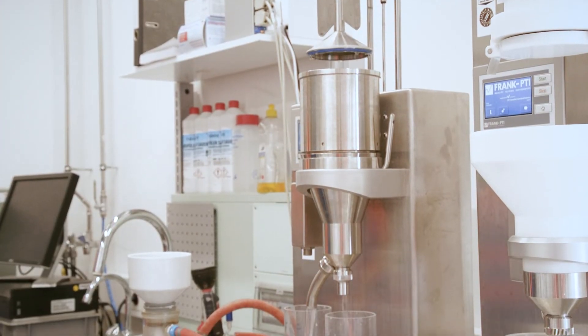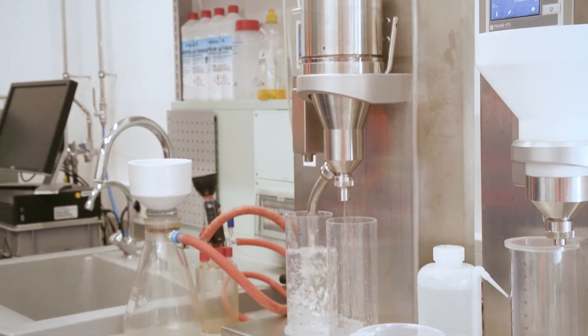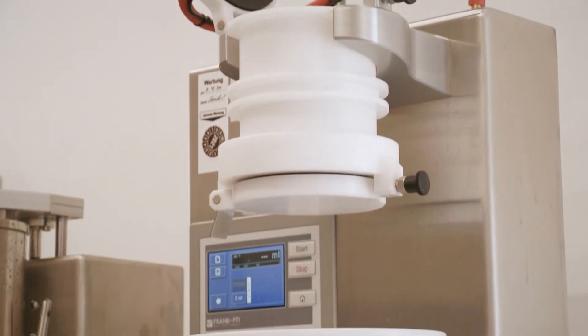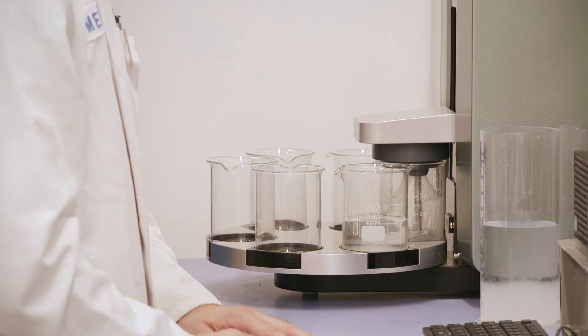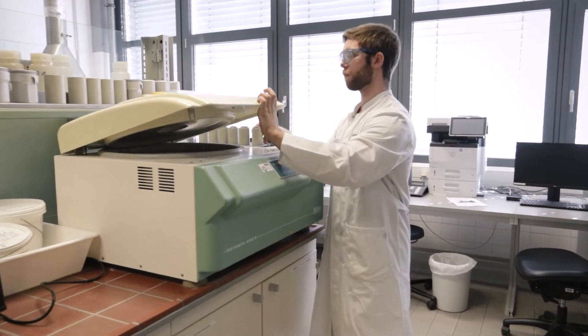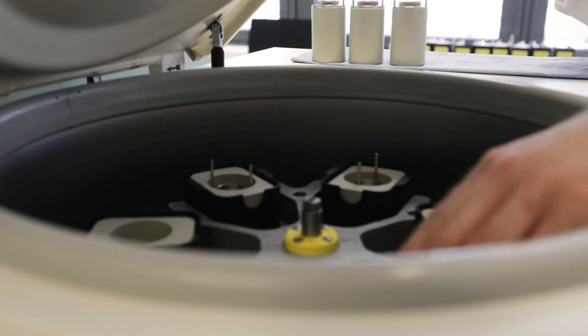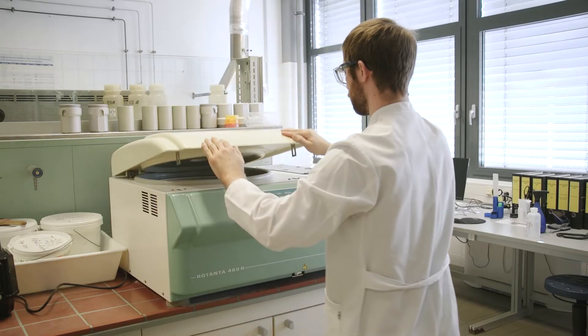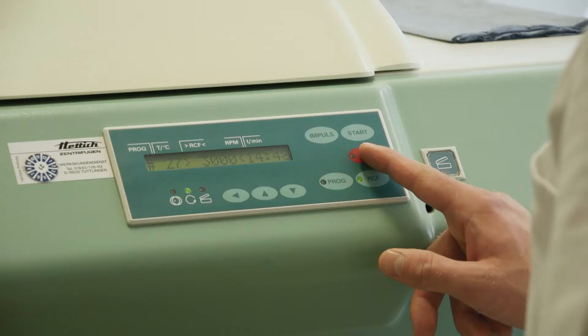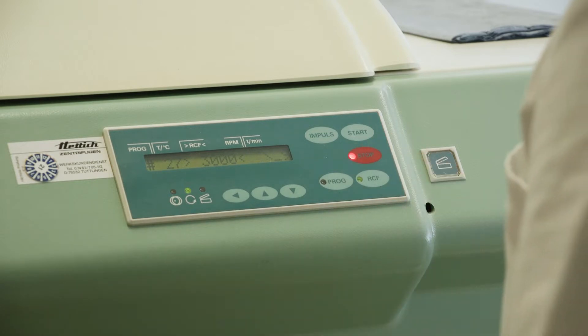The drainage resistance is determined according to Schoper-Riegler or Canadian Standard Freeness if required. We also examine the fiber morphological properties and measure the water retention value as part of our standard evaluation. The water retention value provides information about the water stored in the fiber structure and thus the swelling capacity of a fiber.